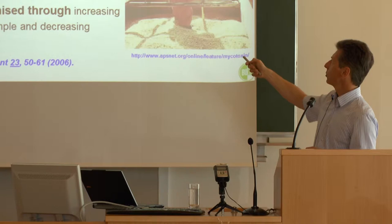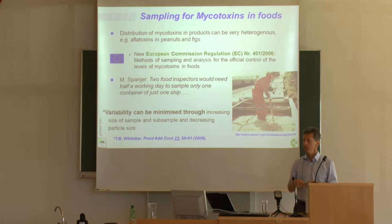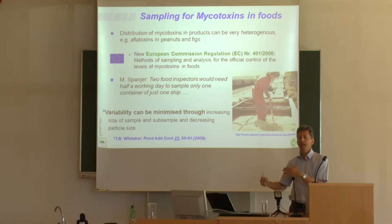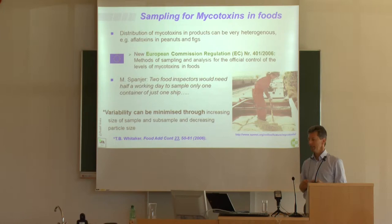The distribution of mycotoxins in products can unfortunately be very heterogeneous. A worst-case example is aflatoxins in peanuts and figs. One of the best-case examples is deoxynivalenol in wheat — you will hardly find any hot spots there. Though heterogeneous distribution cannot be excluded, the likelihood of heterogeneity for Fusarium toxins is much less than for aflatoxins.